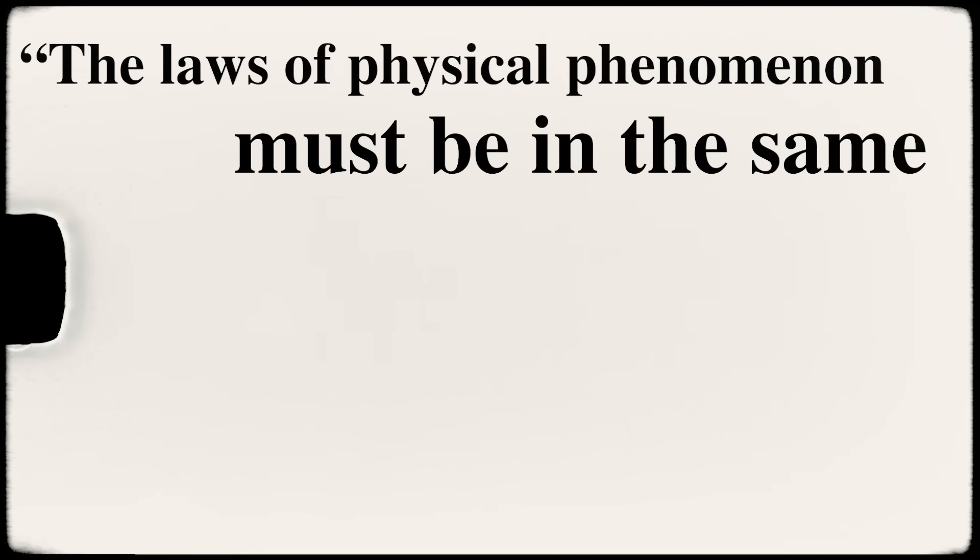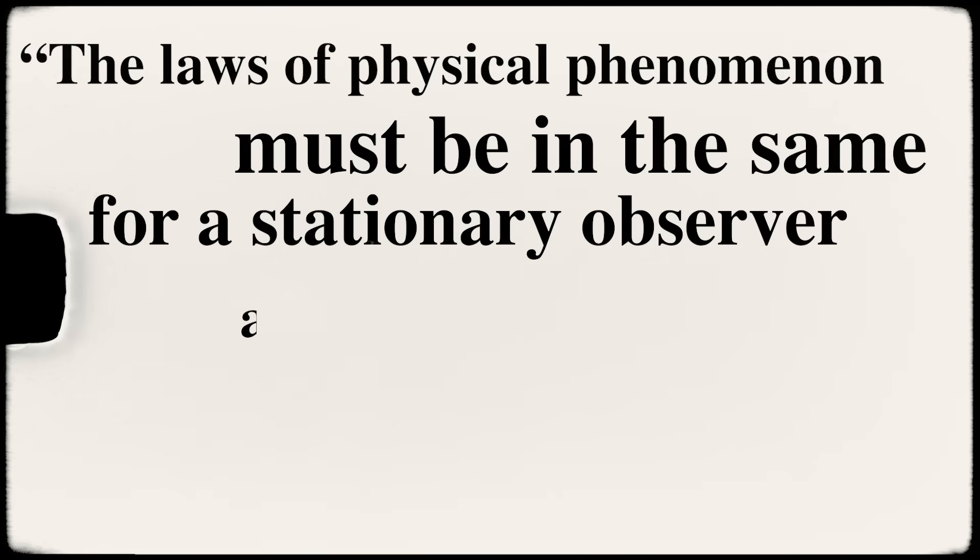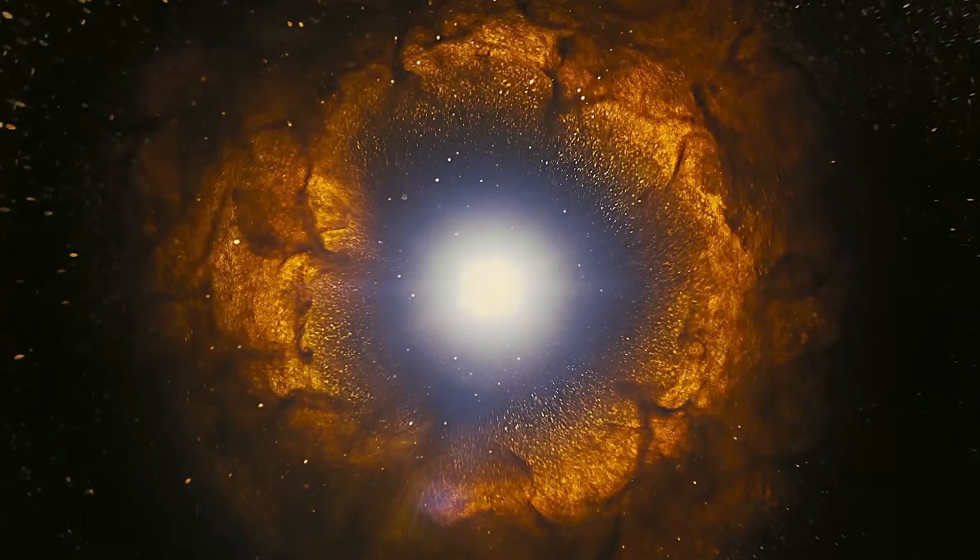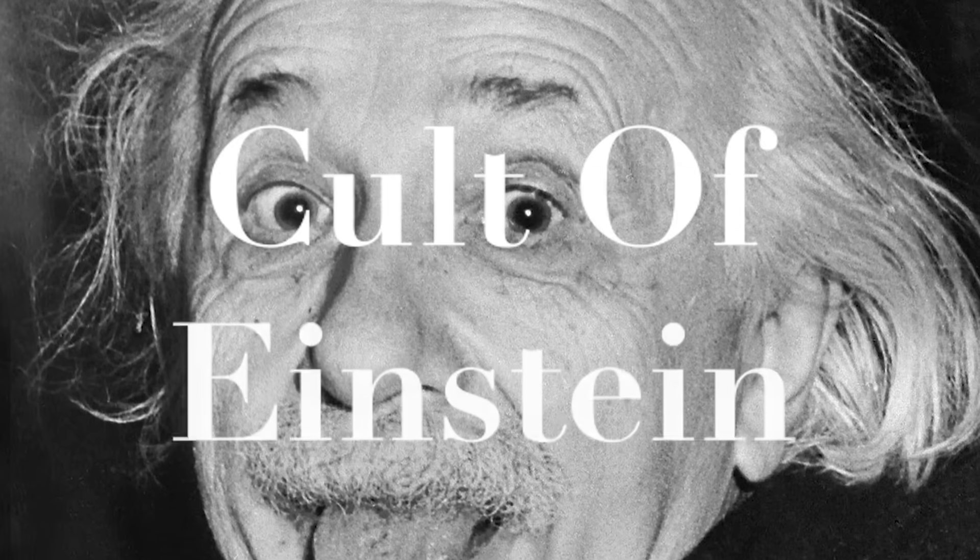Meanwhile, Henri Poincaré had published works that not only used Lorentz's equations, but also formulated the principle of relativity in nearly modern terms. In fact, in 1904, Poincaré wrote, 'the laws of physical phenomena must be in the same for a stationary observer as for one in uniform motion.' Sound familiar? Poincaré even speculated on the unification of space and time and arguably got closer than anyone before Minkowski ever did. Yet today, their names are often buried beneath the Einsteinian monolith.